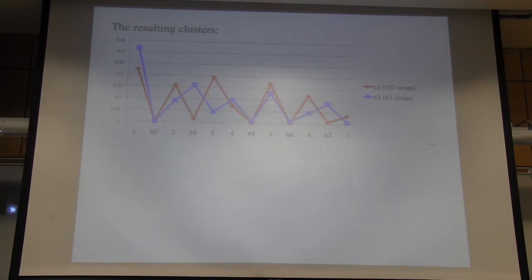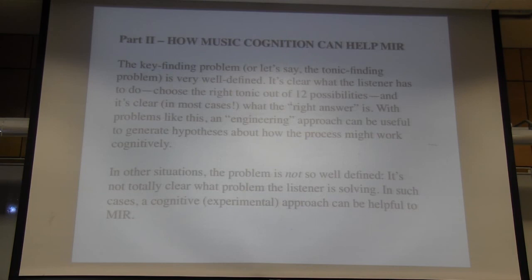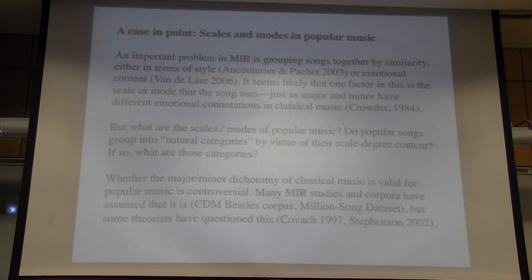Is your goal to build a model to better understand psychological processes in key finding, or just to build a program capable of doing it at a high level? In this talk I'm going back and forth between the two goals. In the part about modes and scales, that was approached from an engineering point of view, but then we found experimental work was relevant to it. It's also an interesting music cognition question. Part of the point is just the convergence of those goals.